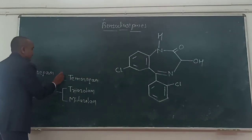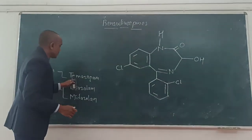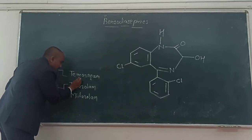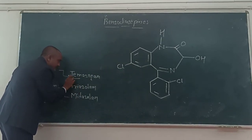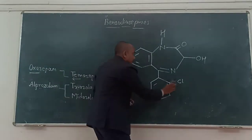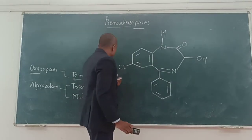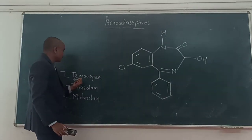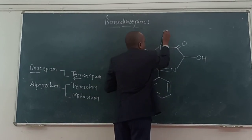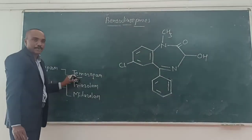From lorazepam, we can also prepare temazepam. To remember this, look at the letters M-E-T in the name, which indicates the presence of a methyl group. Come back to the structure of oxazepam, and just substitute the methyl group at the nitrogen, and you get the structure for temazepam.